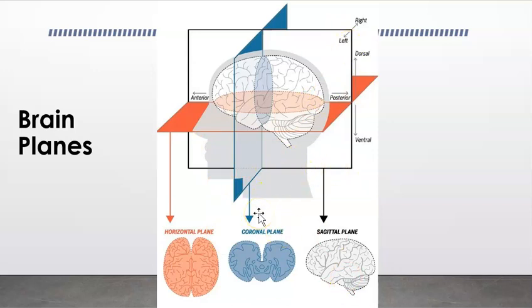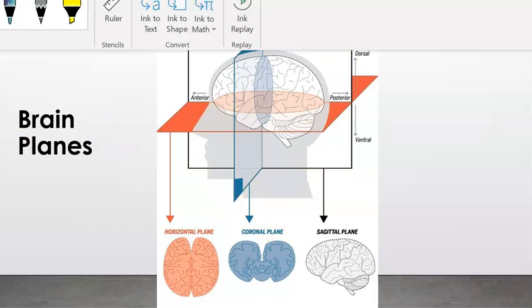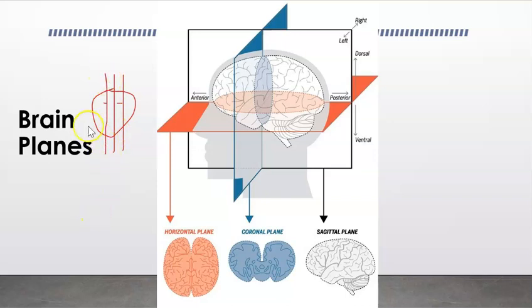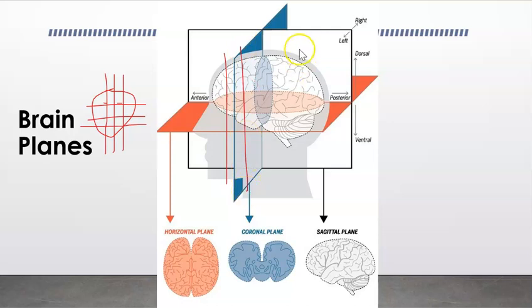So for sagittal cuts, let me draw. If this is your head with your eyes here, sagittal cuts would be cutting like this — these are sagittal cuts. Horizontal would be like this, with different cuts taken horizontally. The coronal plane cuts along the side.